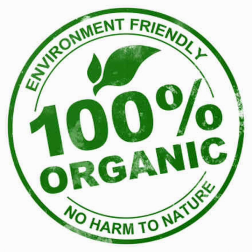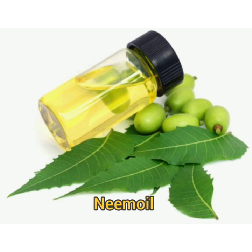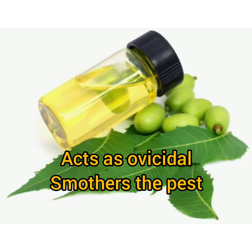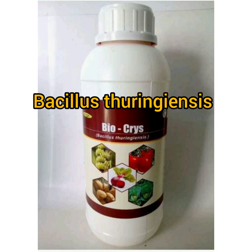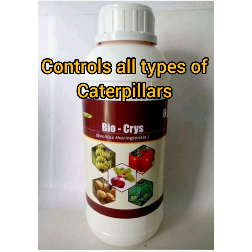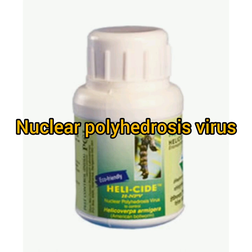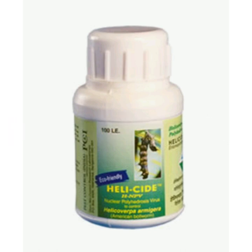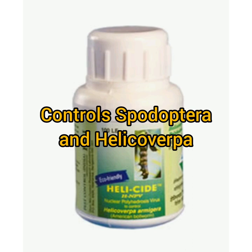The basic natural products include neem oil, which is a very effective pesticide and fungicide — it acts as an ovicide and smothers pests. The second biocide is Bacillus thuringiensis (Bt), which controls different types of caterpillars and is very effective on first, second, and third instars. The next is NPV (Nuclear Polyhedrosis Virus), which controls Spodoptera and Helicoverpa. These are the safest biochemicals.